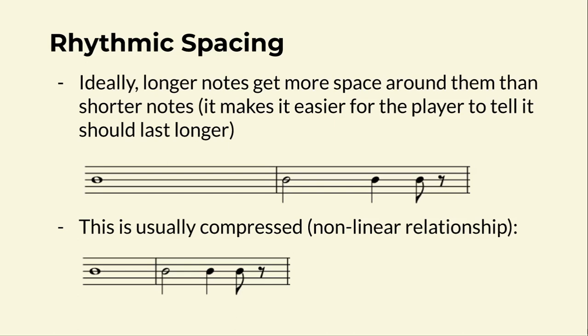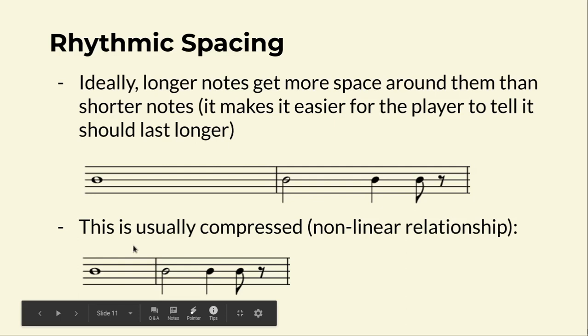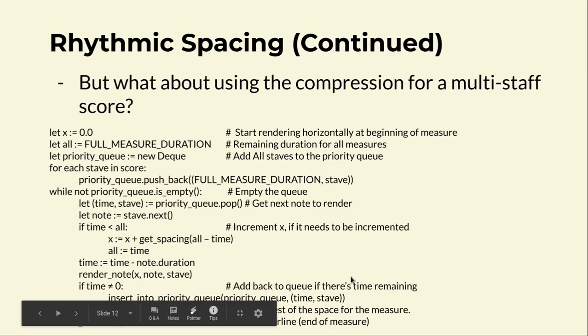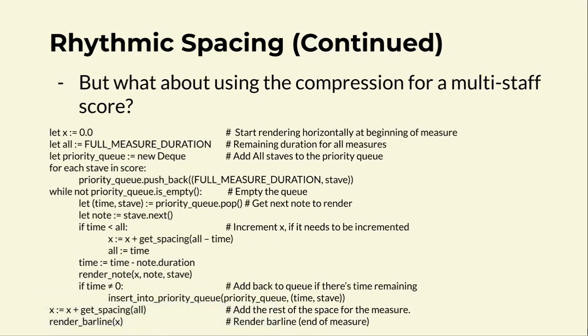Usually what music engravers do is use a compressed version where the whole note still takes up more space, but the quarter note takes up just a little more than the eighth note, the half note a little more than the quarter, and the whole note a little more than the half. This gets complicated when you want to do the spacing algorithm across a multi-staff score — you have to make sure everything lines up because you want all the notes to start at the same x coordinate for all the staves.